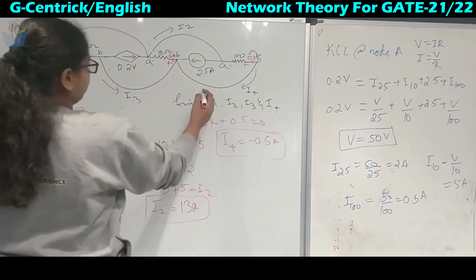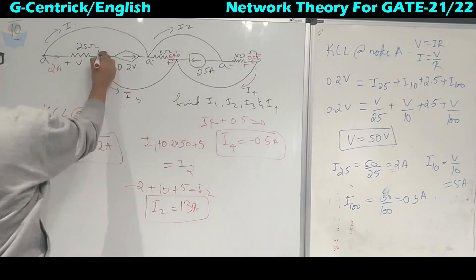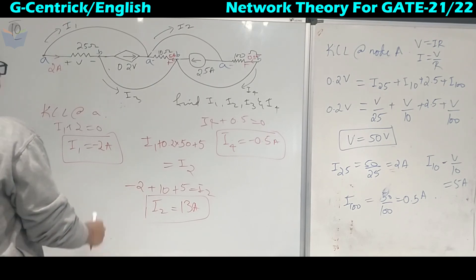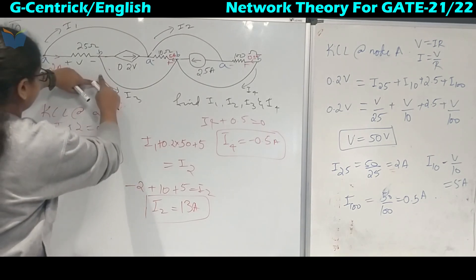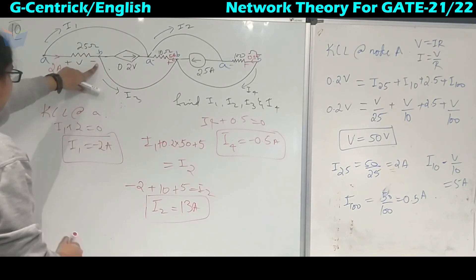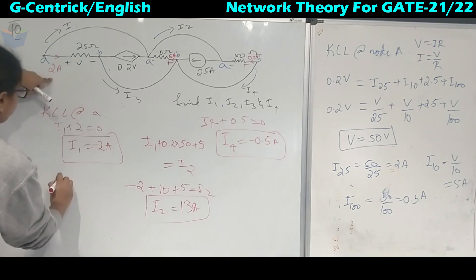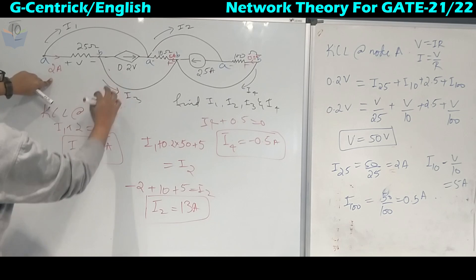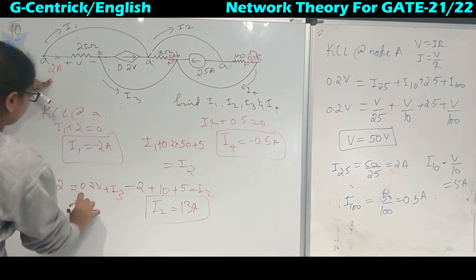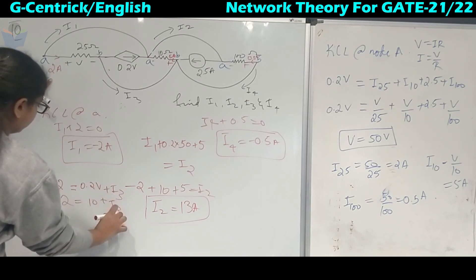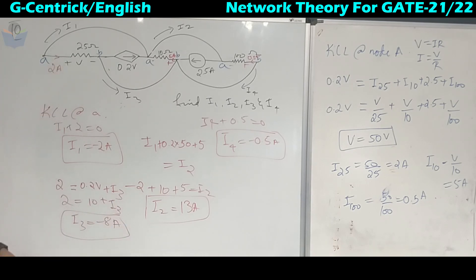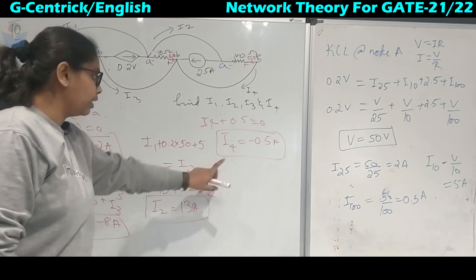For I3: applying KCL at that node with 3 branches. The 2-ampere current is entering; 0.2V (= 10 amperes) and I3 are leaving. So 2 = 10 + I3, giving I3 = −8 amperes. We now have all four values: I1 = −2 A, I2 = 13 A, I3 = −8 A, and I4 = −0.5 A.